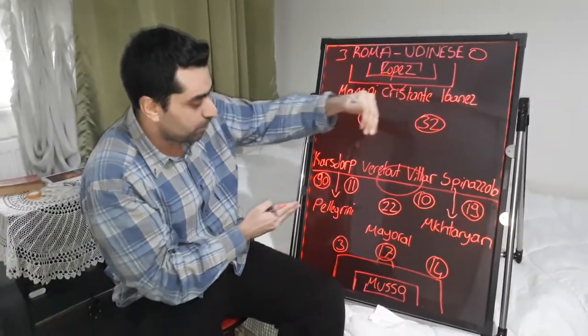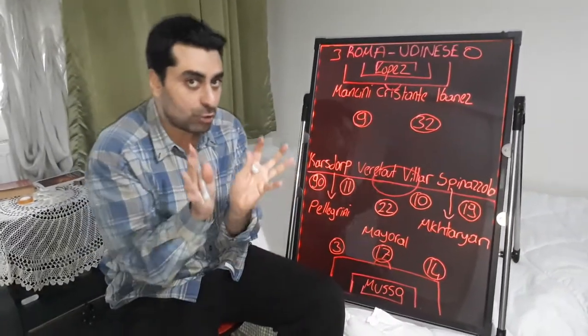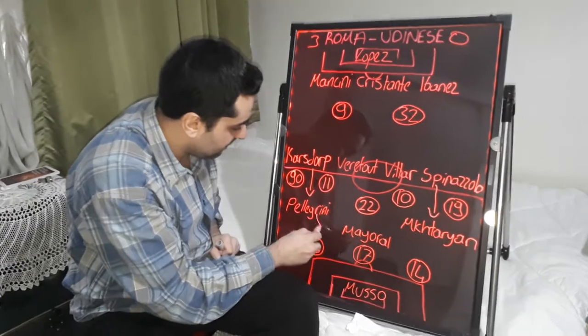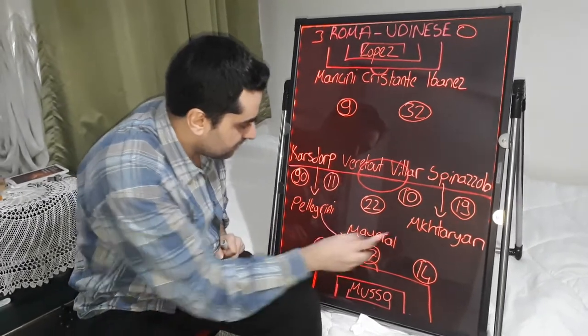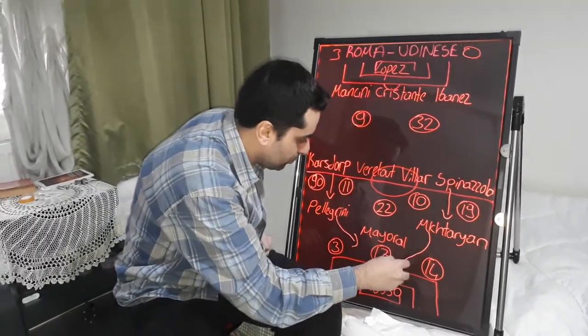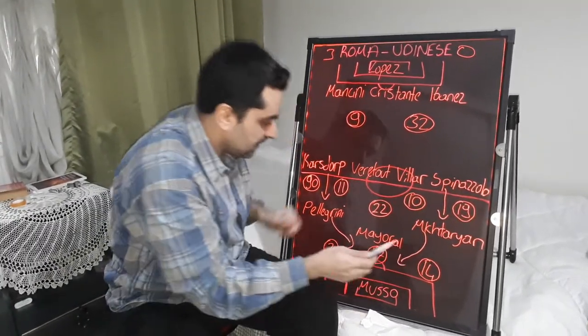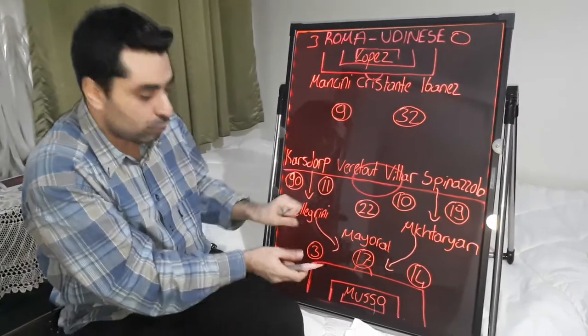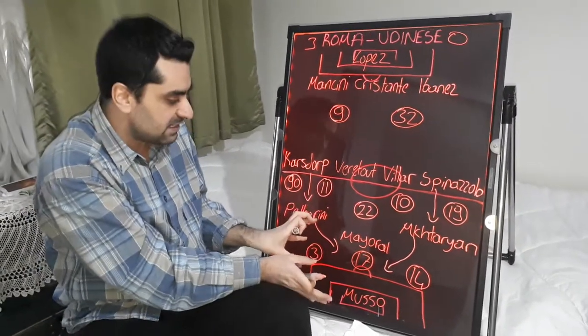When Karstorp and Spinazzola came forward, Pellegrini and Mkhitaryan came to the middle and got into the penalty area, forcing the Udinese defense.